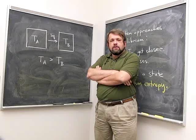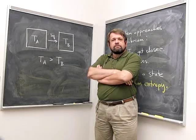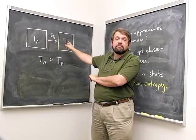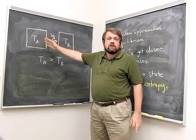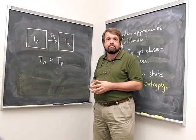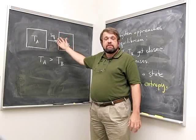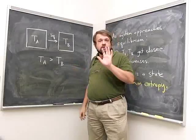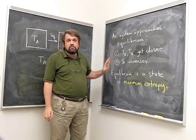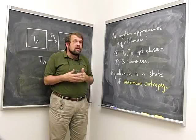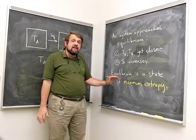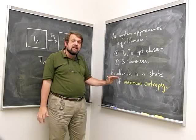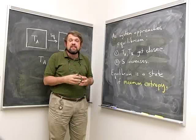As heat flows from A (higher temperature) to B (lower temperature), the temperature of A decreases and the temperature of B increases — the temperatures get closer together. Notice that as heat flows from warmer to colder, the entropy of the system always increases. As the system approaches equilibrium (equal temperatures), entropy increases. This means that equilibrium — the state of equal temperature — is a state of maximum entropy. It is the way of dividing energy between the two systems for which the entropy of the whole system is as large as possible. That's a remarkable result.